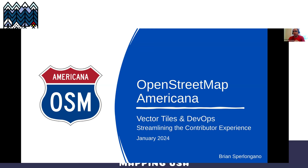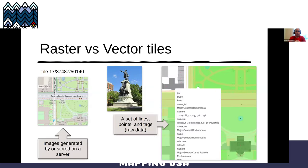I'm Brian Sperlingano. I'm the founder of OpenStreetMap Americana, which is our American map style. I'm also the vice president of OpenStreetMap US. My talk today is discussing how a vector tile would make it easier to contribute to open source maps and lower barriers to entry for people that want to contribute without necessarily having to be programmers or IT wizards. First, what a vector tile is.